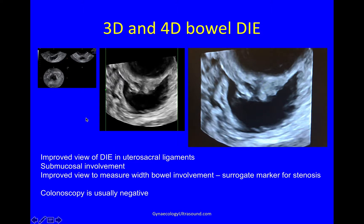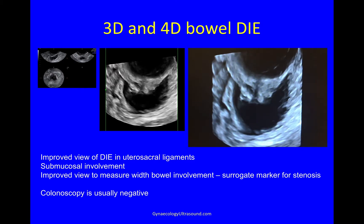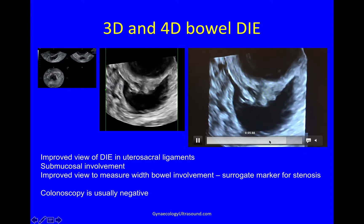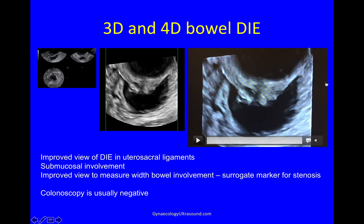You can also do 3D. If you look here at the bowel nodule, I've applied 3D to it and rendered it, and here I've got a nice bowel nodule with the retrocervical nodule attached to it. 3D improves the view of the DIE in the utero-sacral ligaments and gives you a nice submucosal view. You also have an improved view to measure the width of the bowel involvement, which is a surrogate marker for stenosis. Colonoscopy of this lesion is usually normal, so it's very handy to look at it with 2D, 3D, and 4D. Rotating the image gives you a better idea that this very retracted lesion might well be causing significant stenosis.